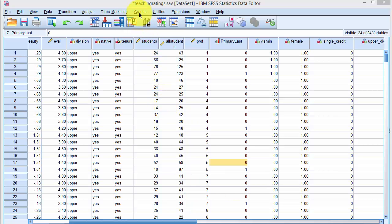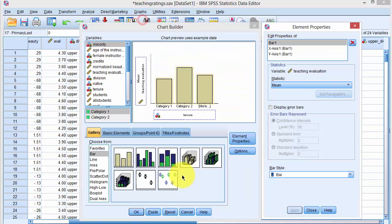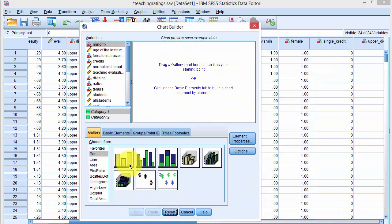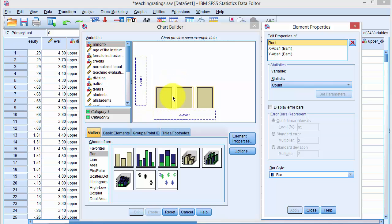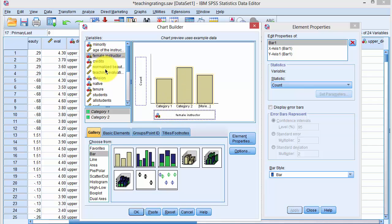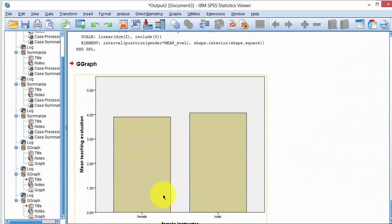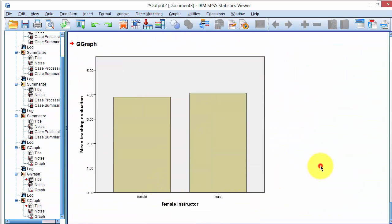Let us repeat the analysis in SPSS. We click on graphs, chart builder, I'm just going to reset it so it's clean, bar, drag the bar chart template here, click on gender or female instructor on the x-axis, teaching evaluation score, drag and drop it on count, and click on OK, and here's the graph.